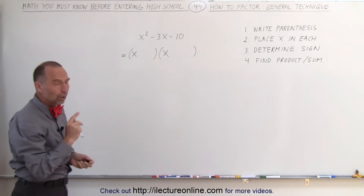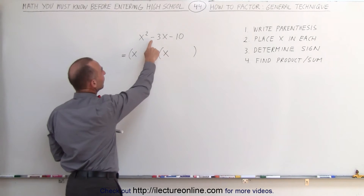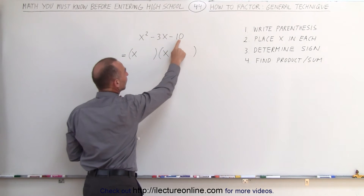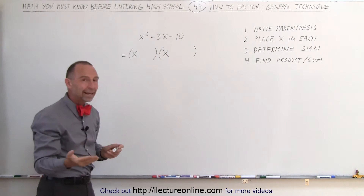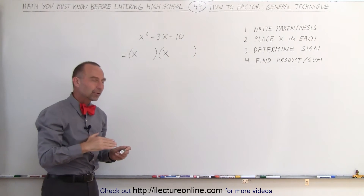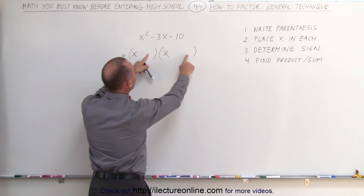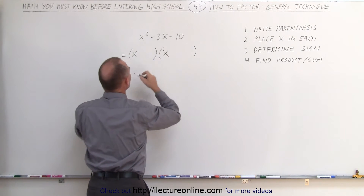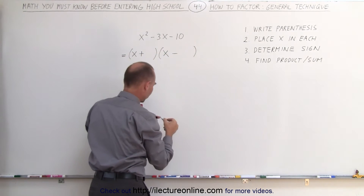The next thing you want to do is determine the sign, and that's determined by looking at these two signs right here. To get the number negative 10, you're going to have to multiply a negative number and a positive number together, which means these must be either a positive and a negative, or a negative and a positive — which means the signs are a plus and a minus.